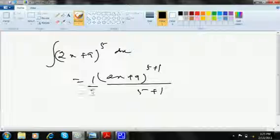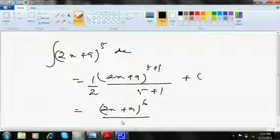So this will be 2x plus 9 whole to the power 6 divided by 6 into 2. It will be 2x plus 9 whole to the power 6 divided by 12 plus c.